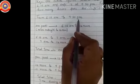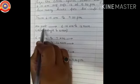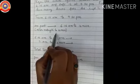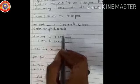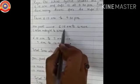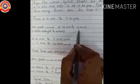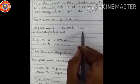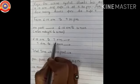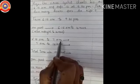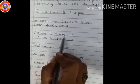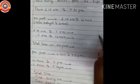Let's find out the time from 6.15am to 9.30pm. First, you have to take the AM part. AM part means after midnight to 12 noon. So here the AM part is from 6.15am to 12 noon. At first we have to find 6.15am to 7am.